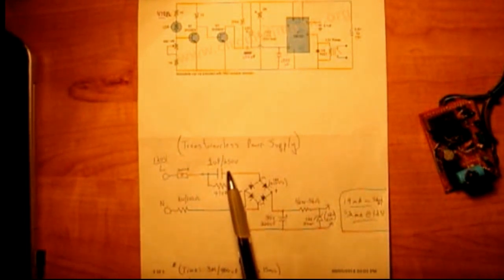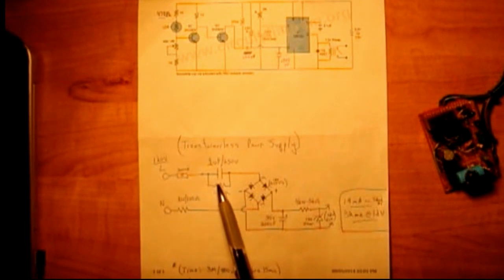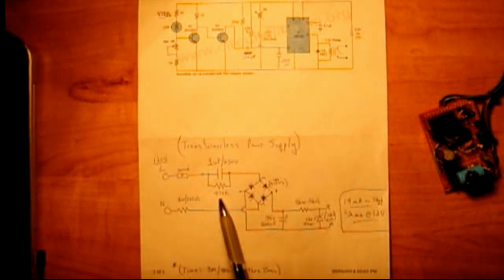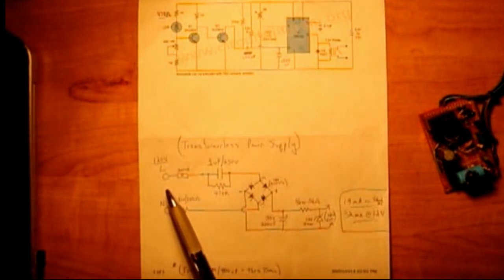Ideally for safety, you should use a type X. But if you do not have one, you could use a poly capacitor. They'll work fine also. In parallel with the capacitor is a 470k ohm resistor. The only purpose of this 470k resistor is to bleed off any charge on this capacitor in the event the circuit is removed from power.